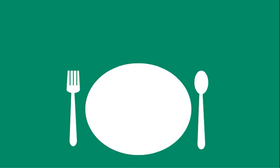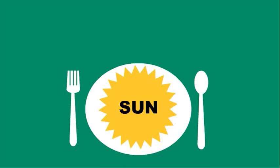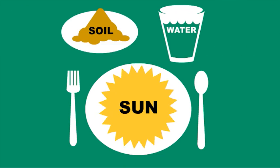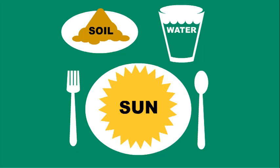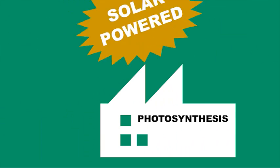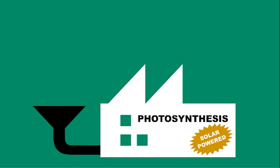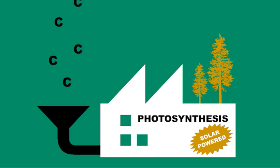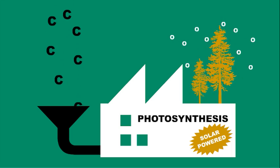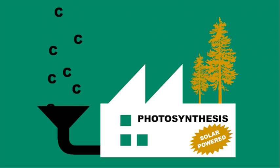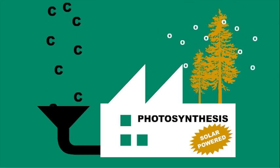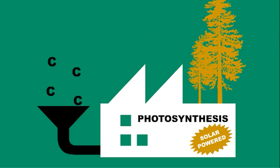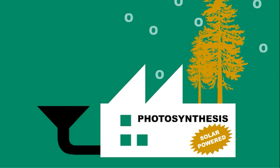Trees, like all plants, need sunlight to grow, along with water and nutrients. They use the sunlight to make their own food through photosynthesis. For this process, the tree takes in carbon dioxide from the air and uses it to grow bigger and stronger, releasing oxygen in the process.